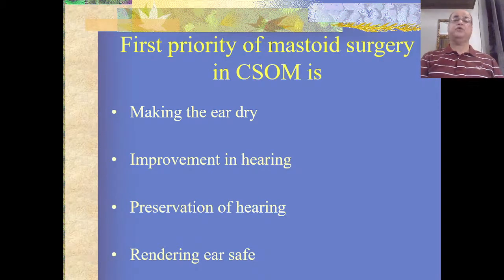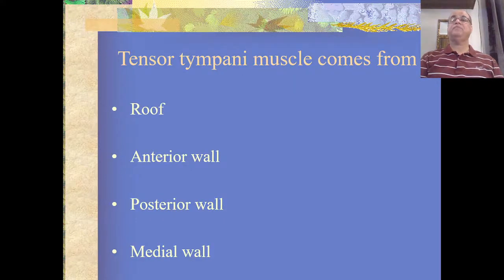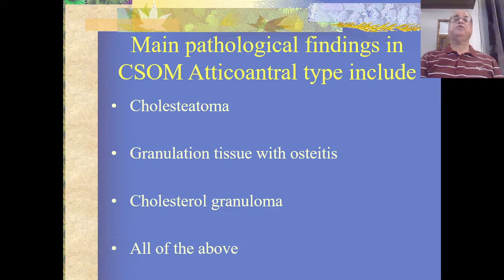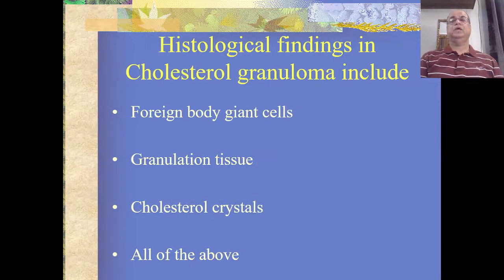Now some MCQs regarding this topic: the primary aim of mastoid surgery is rendering the ear safe. Aditus connects the mastoid antrum to the middle ear through which wall? Tensor tympani muscle comes from which wall of the tympanic cavity? What are the main pathological findings in chronic suppurative otitis media, atticoantral type? What are the histological findings in cholesterol granuloma?